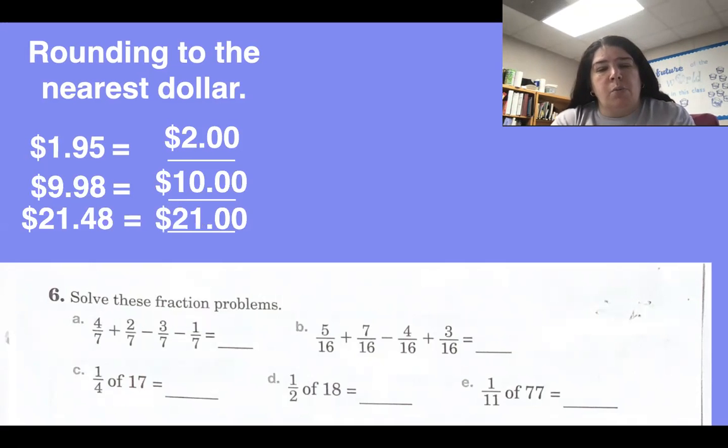Number six on your worksheet says add the fractions. Four sevenths plus two sevenths. Four plus two is six, so six sevenths minus three sevenths. Six minus three is three. Minus one seventh. And your answer is two sevenths. Let's see how quick it can be. Five sixteenths plus seven sixteenths minus four sixteenths plus three sixteenths. Eleven sixteenths, very nice.